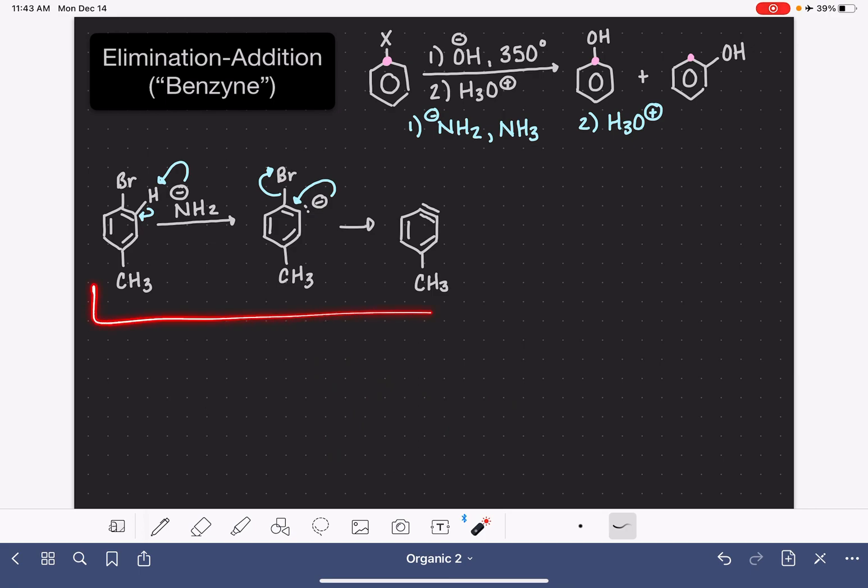So this much of it was the elimination portion, and now we're ready for the addition portion of the reaction. We're going to bring in more NH2-, and that NH2- is going to attack either one of the carbon atoms in the triple bond. It could be either one, and this is where we end up with those two different products.